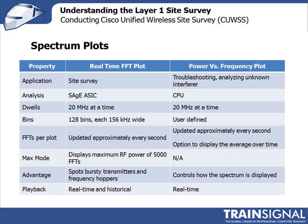Let's go back to the discussion about the real-time FFT plot and the power versus frequency plot. The real-time FFT plot operates on a 20 megahertz channel with 128 subchannels, or bins. Listening for a 30 millisecond period gathers 5,000 samples.